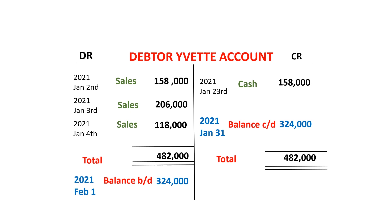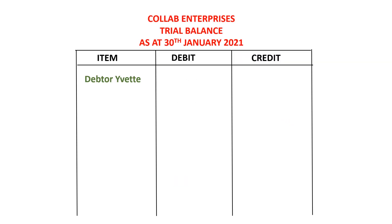Why does it have a debit balance? Because the debit side is bigger than the credit side — the debit side is bigger than the credit side by 324,000. So because this ledger account, which we've called Yvette, which is an asset, is having a debit balance, when we are preparing a trial balance, we will go ahead and post that balance in the trial balance. In the column for item, we shall put the names of the ledger accounts. In this case, we are putting Yvette. So we said it has a debit balance because the debit side is bigger than the credit side, and that's why we put that balance as 324,000.